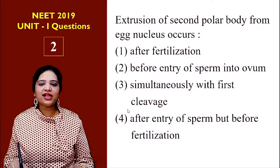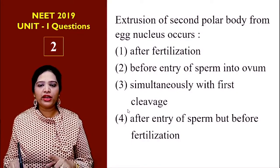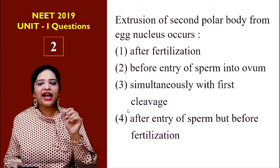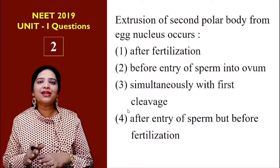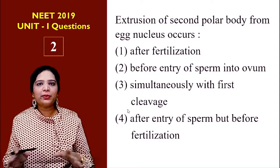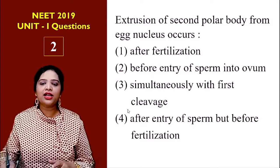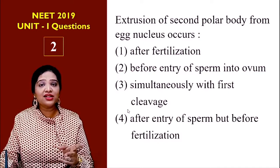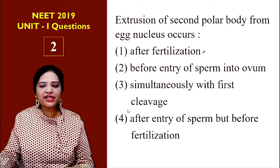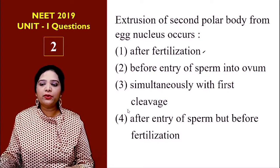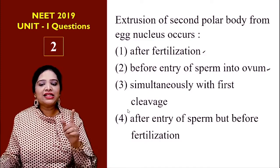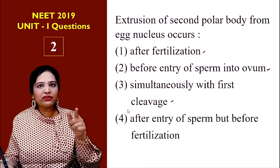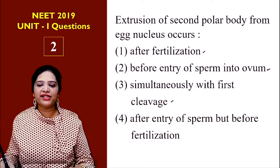The second question is: extrusion of the second polar body from the egg nucleus occurs — when? Extrusion means separation or expelling out. The options are: after fertilization; before entry of the sperm into the ovum; simultaneously with first cleavage; or after entry of the sperm but before fertilization.